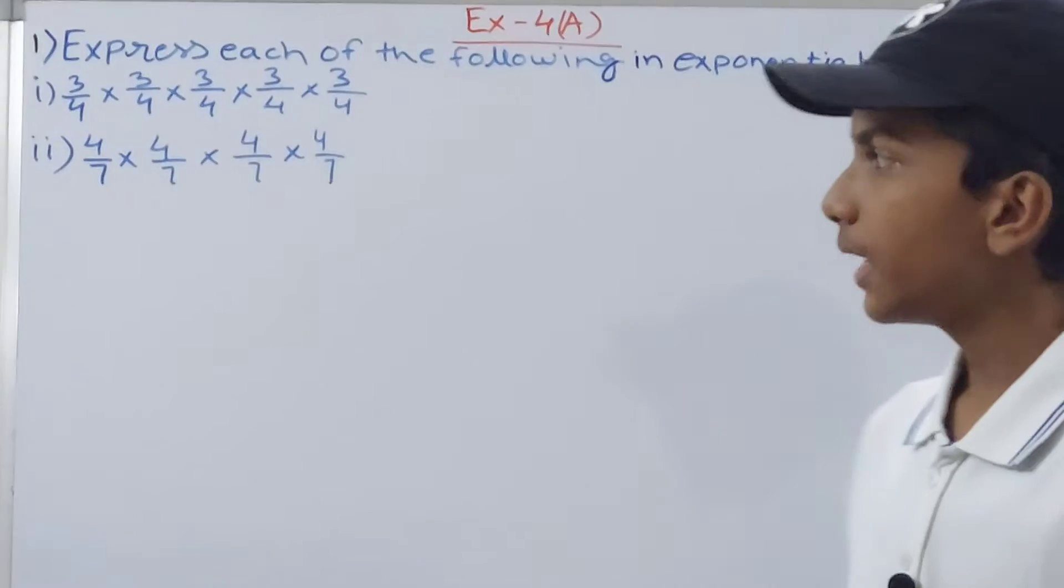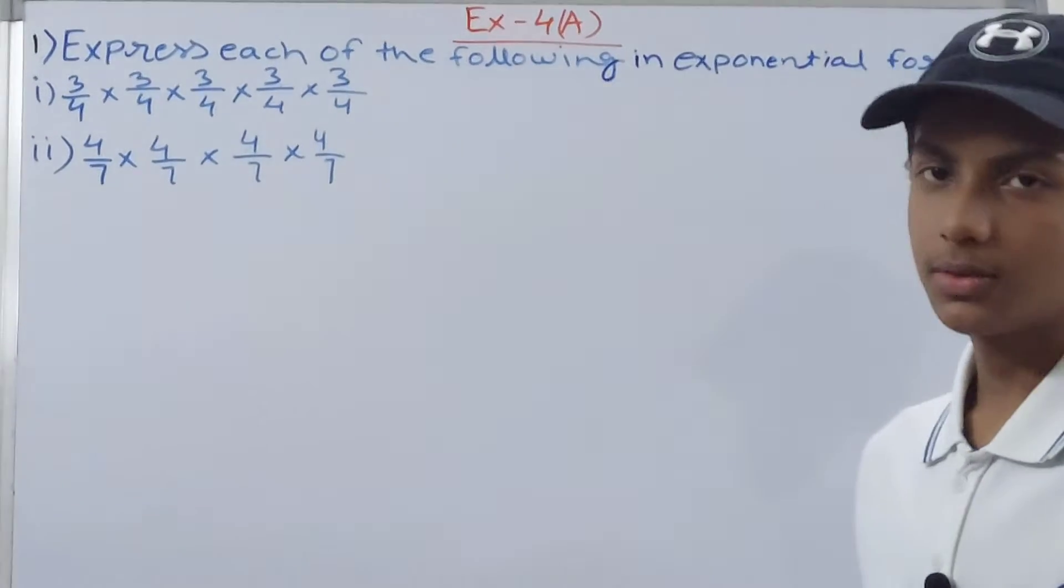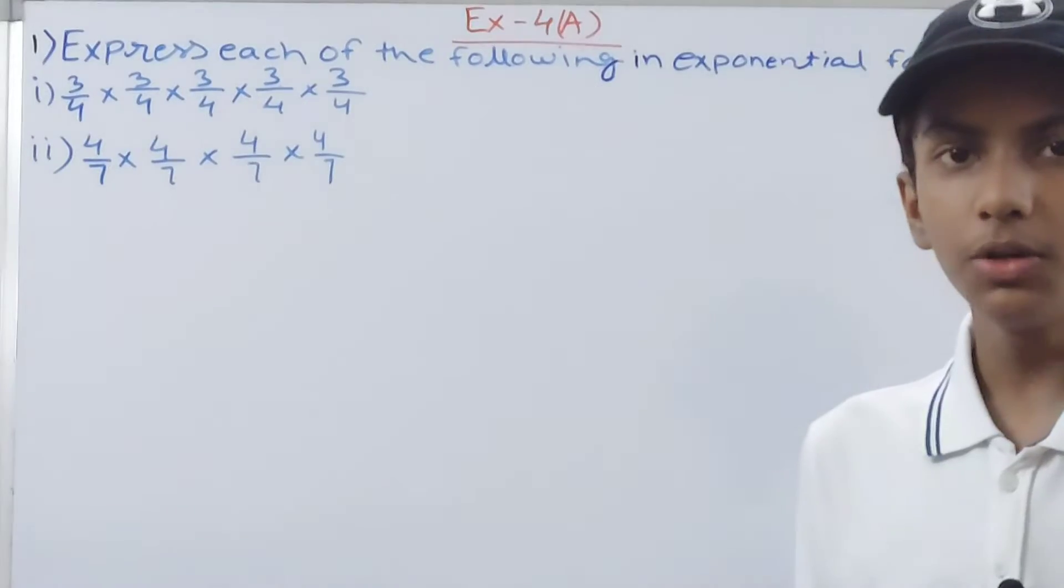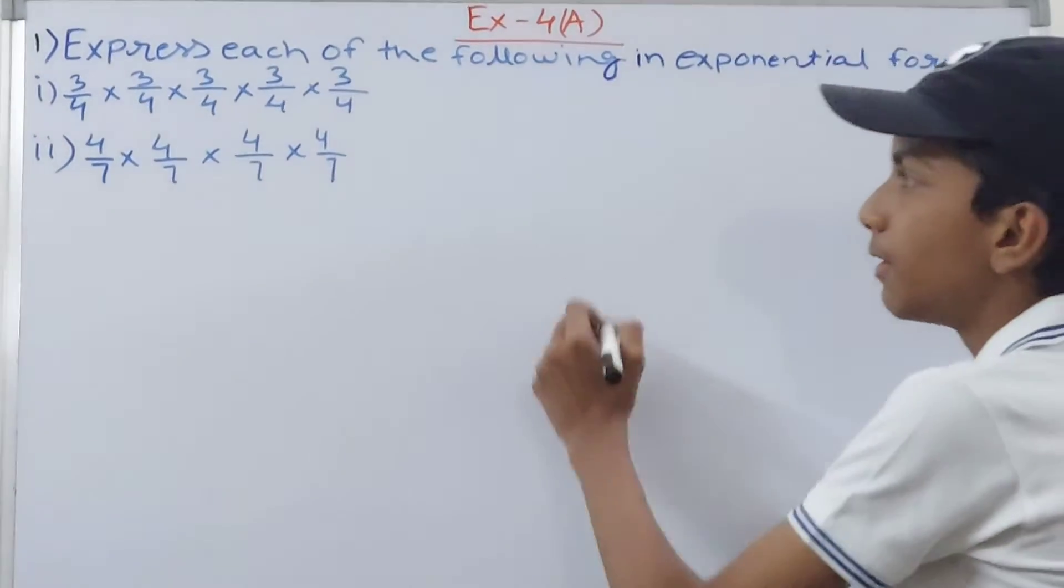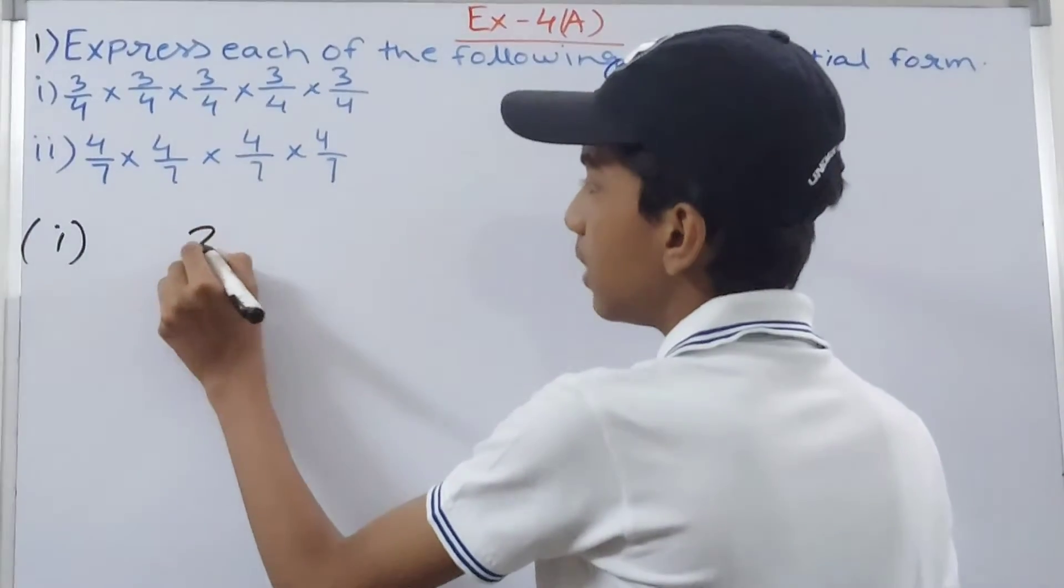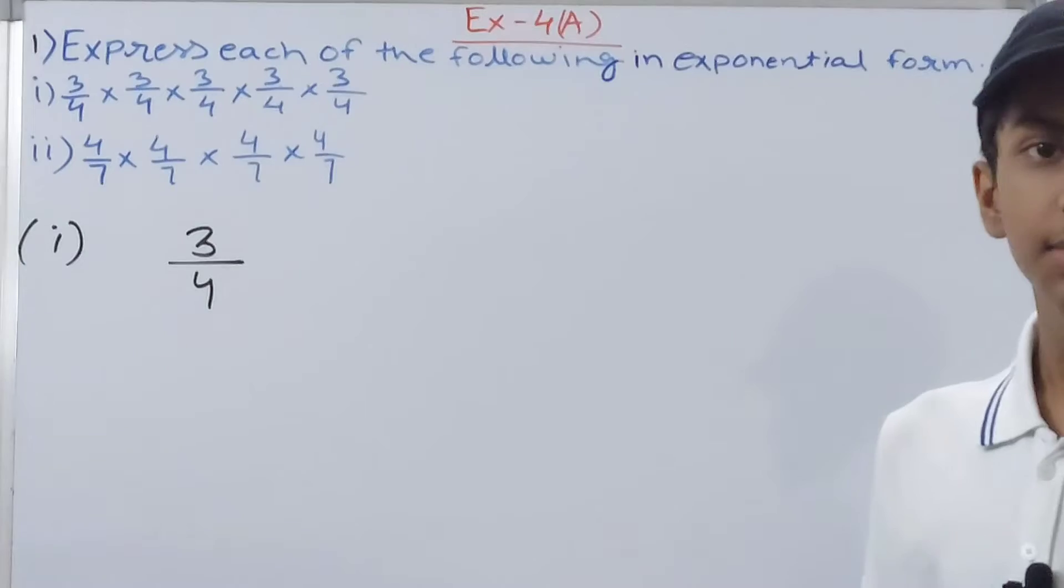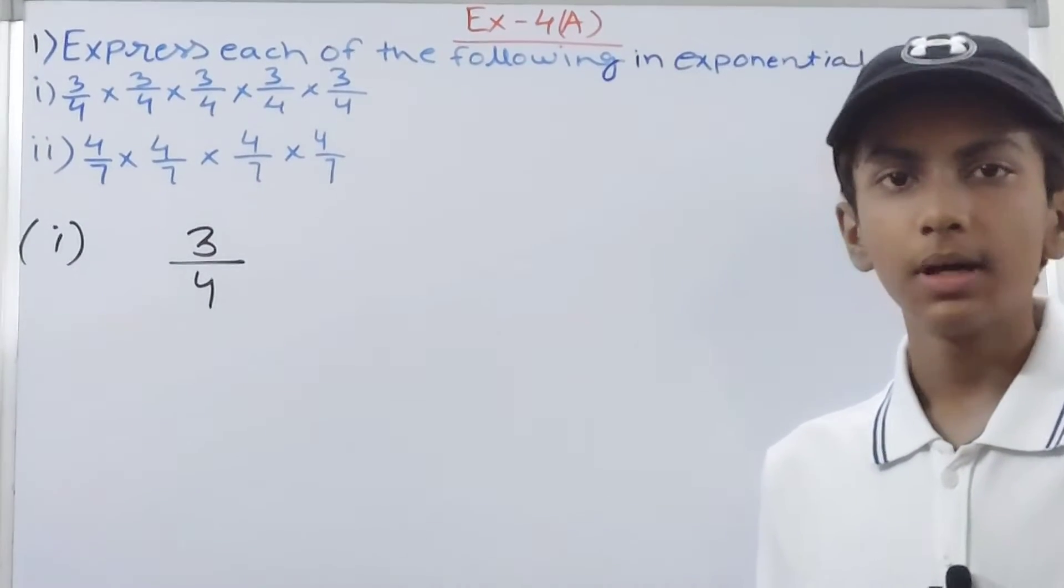Now let's solve the first part. The first one is 3 upon 4 into 3 upon 4 and so on. What you need to do is first write the base. What is our base? That is 3 upon 4. This number is being multiplied by itself a number of